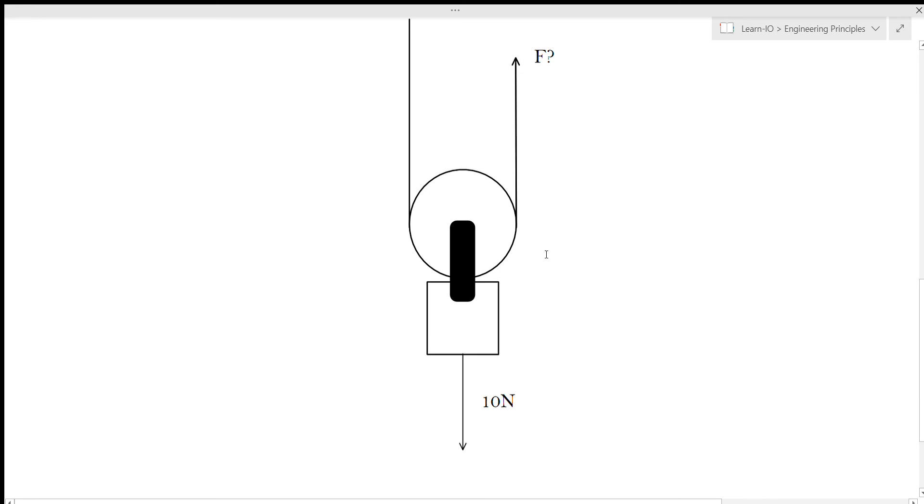That means that we have two strings - our mechanical advantage is two to one. Since we know our mechanical advantage is two to one, we then know that for every one newton we put in we'll get two out. So 10 newtons divided by two gives us our force is five newtons.